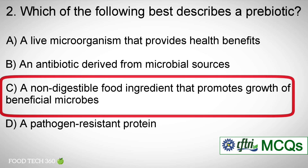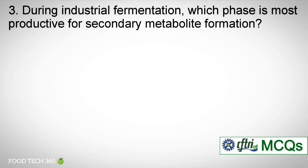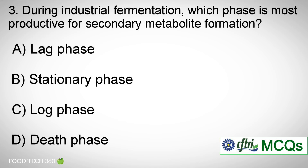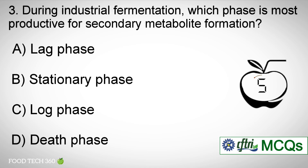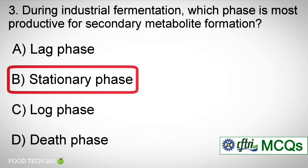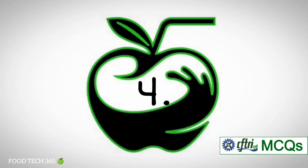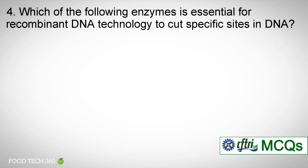Question number three: During industrial fermentation, which phase is most productive for secondary metabolite formation? Options: A) Lag phase, B) Stationary phase, C) Log phase, D) Death phase. Correct answer: B) Stationary phase.